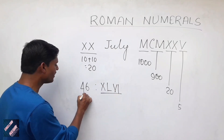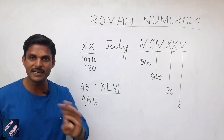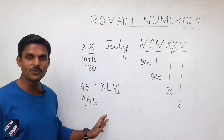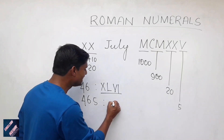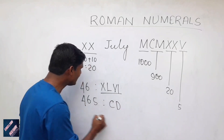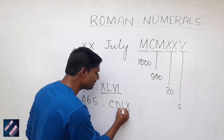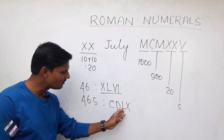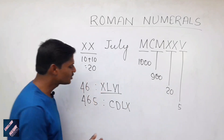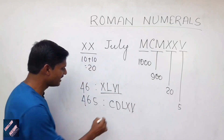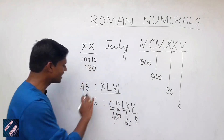We will see 465. What is 400? D is 500, so 400 is CD — 100 less than 500. 60 is LX — L is 50 and X is 10, added to 50. And V is 5. So 465 is CDLXV — CD is 400, LX is 60, V is 5. Total is 465.